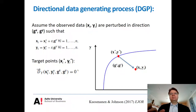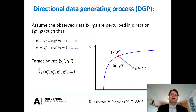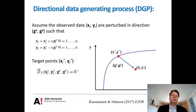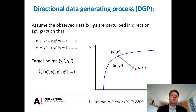This data generation process may seem counterintuitive to those used to measuring distance from the observed point to the frontier. Here we have reversed the role of the direction vector: rather than measuring distance from the frontier, we start from the frontier and use this directional data generating process to obtain our observed data. The direction vector indicates the extent to which each input and output variable is subject to inefficiency and noise, with univariate epsilon transformed to multiple inputs and outputs via the direction vectors G.